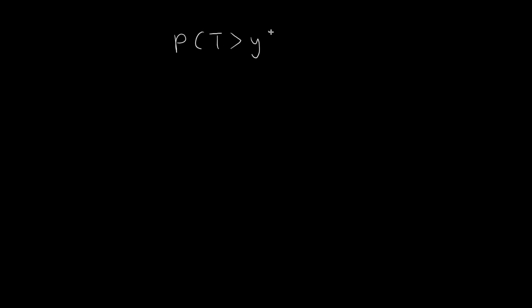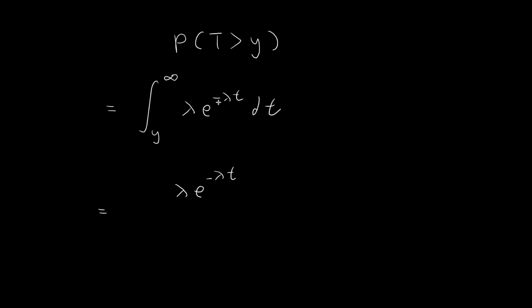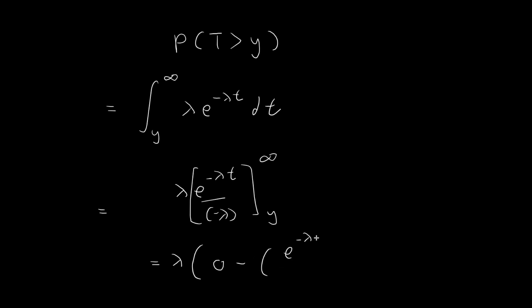In order to establish our proof, let's evaluate this expression and get a general formula for the probability that we need to wait for more than y seconds. To evaluate this, we take an integral from y to infinity of the probability density function for the exponential distribution. Evaluating this is fairly easy — we take the anti-derivative of the exponential term, getting negative lambda in the denominator, integrating from y to infinity. Since y is a positive constant, the term at infinity tends to 0, so we get 0 minus e to the power of negative lambda y over negative lambda. The negatives cancel out, giving us e to the power of negative lambda y.